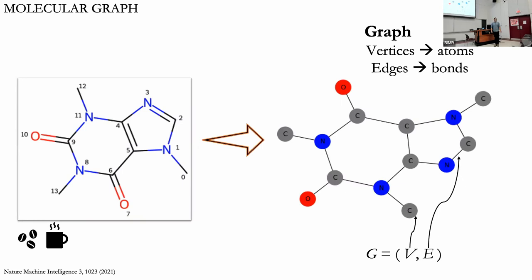Today I'll talk about one representation that is close to the heart of chemists: graphs. If I ask the audience to draw the molecule of caffeine, you're going to draw something like this — some sort of human bias of how we believe atoms talk to each other. We have an oxygen atom connected to carbon atoms, which in turn are linked to other carbon atoms and nitrogen. This diagram also comes from math — we can relate it to nodes and edges. Chemistry notation intrinsically is a graph.